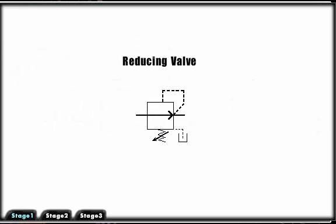A pressure reducing valve is a normally open pressure control valve used to limit pressure in one or more legs of a hydraulic circuit. Reduced pressure results in a reduced force being generated.